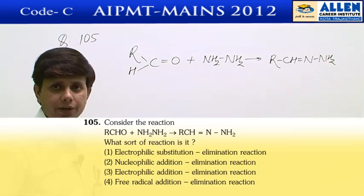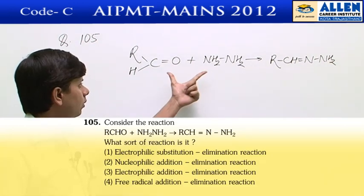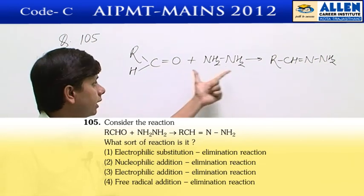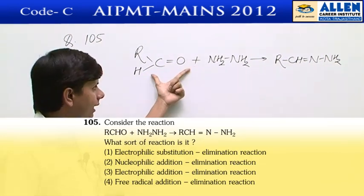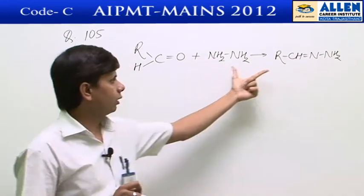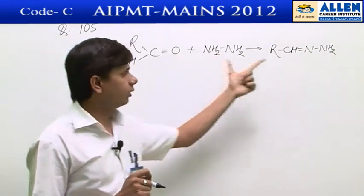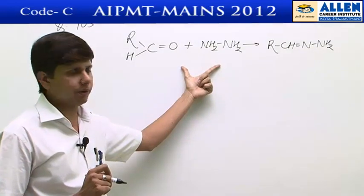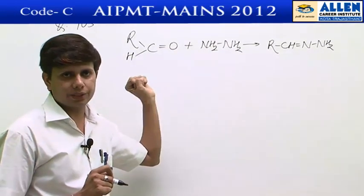In question number 105, the question is: what is the type of this reaction? The given reaction is the reaction of an aldehyde with hydrazine to give hydrazone. The type of reaction can be identified on the basis of the mechanism involved in the reaction.